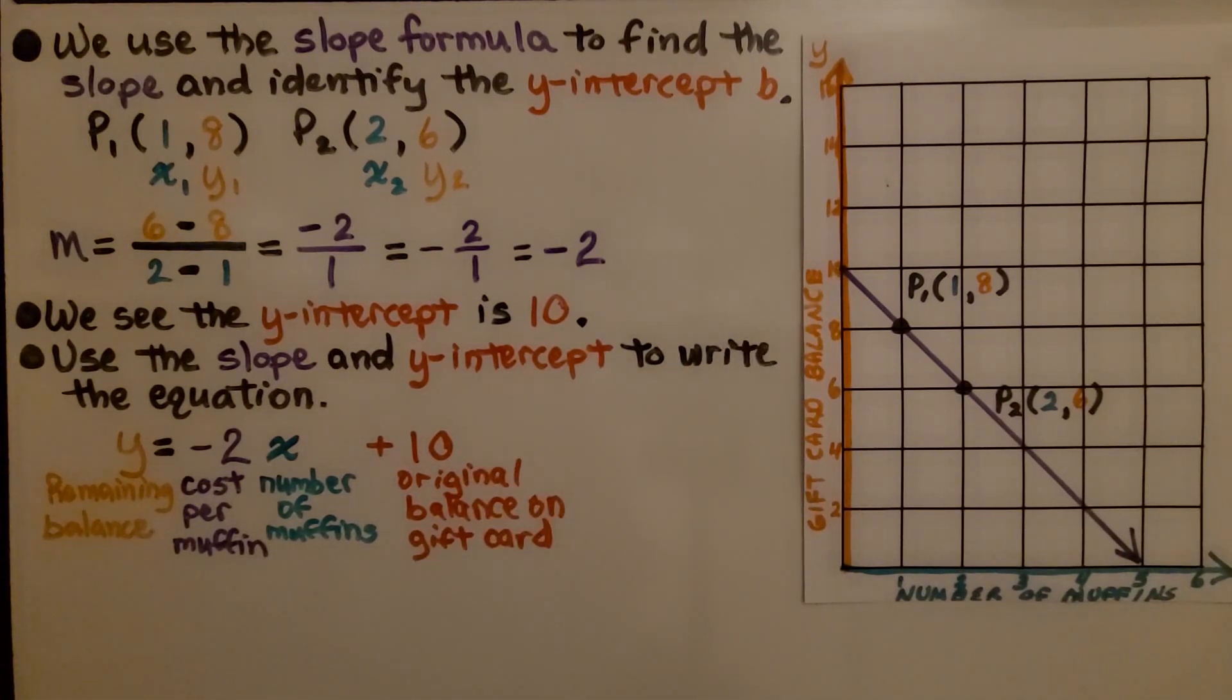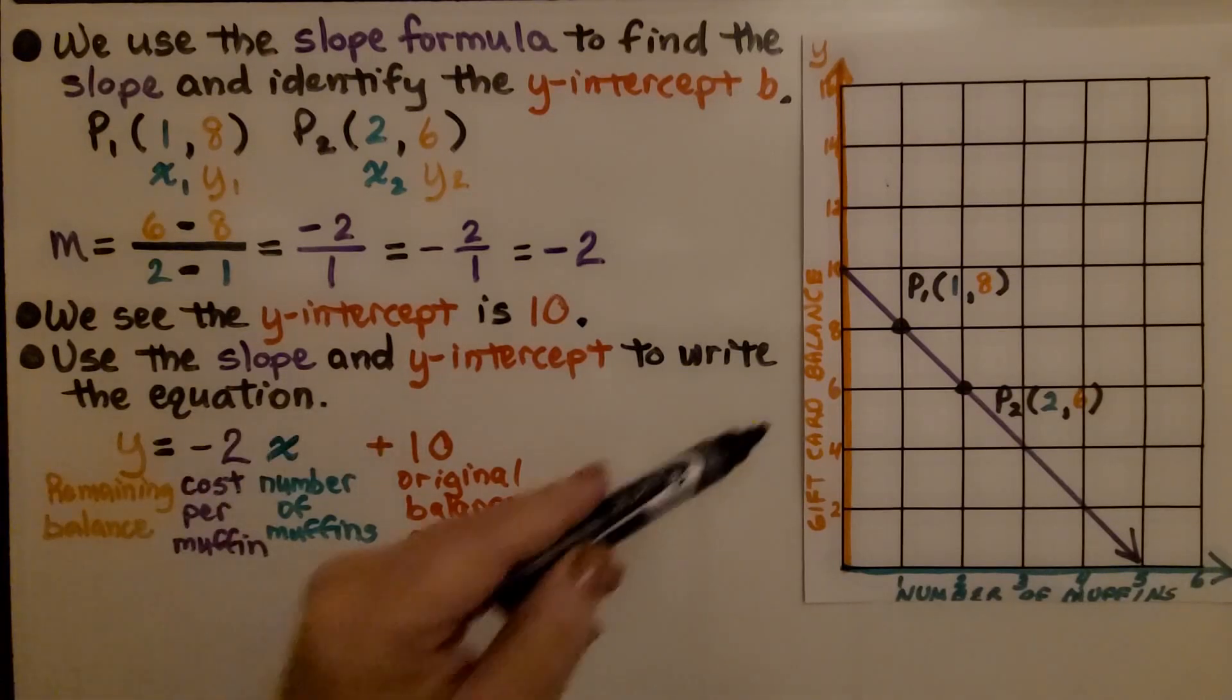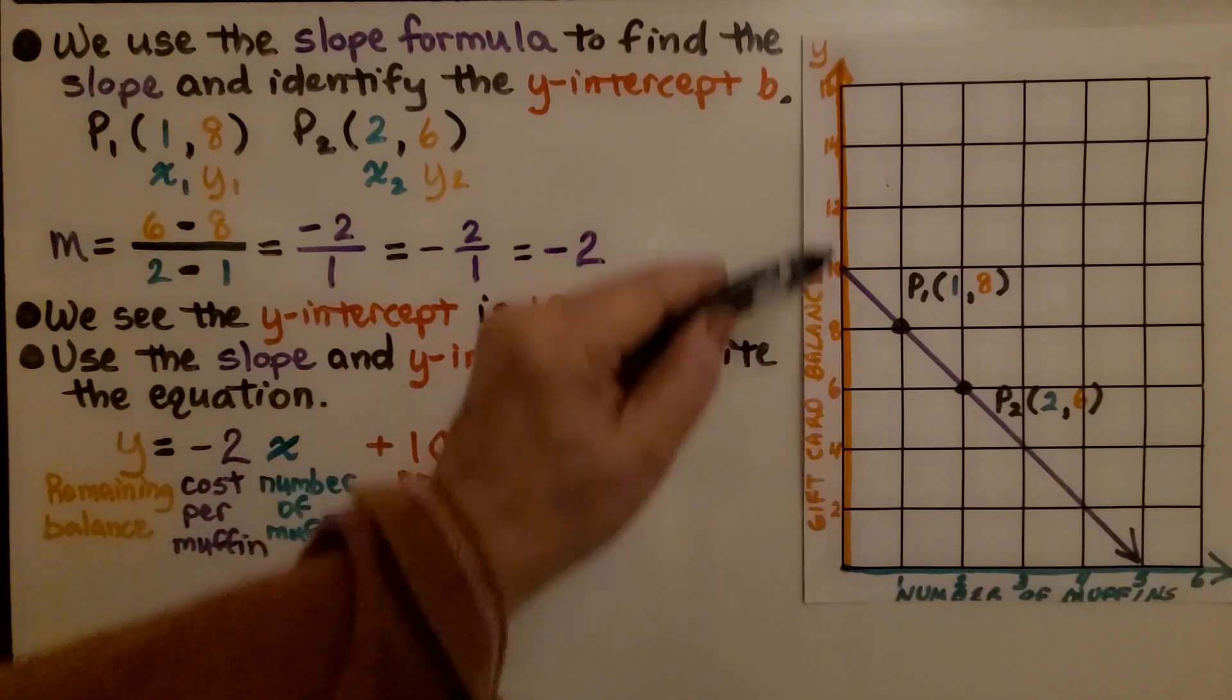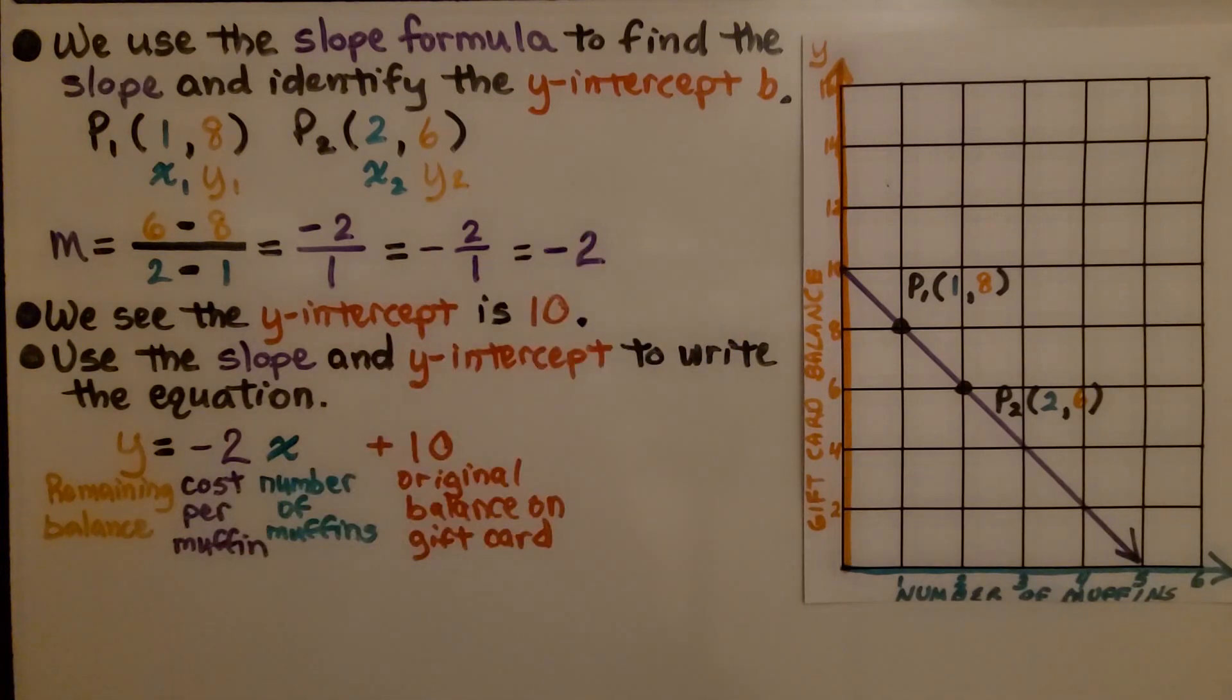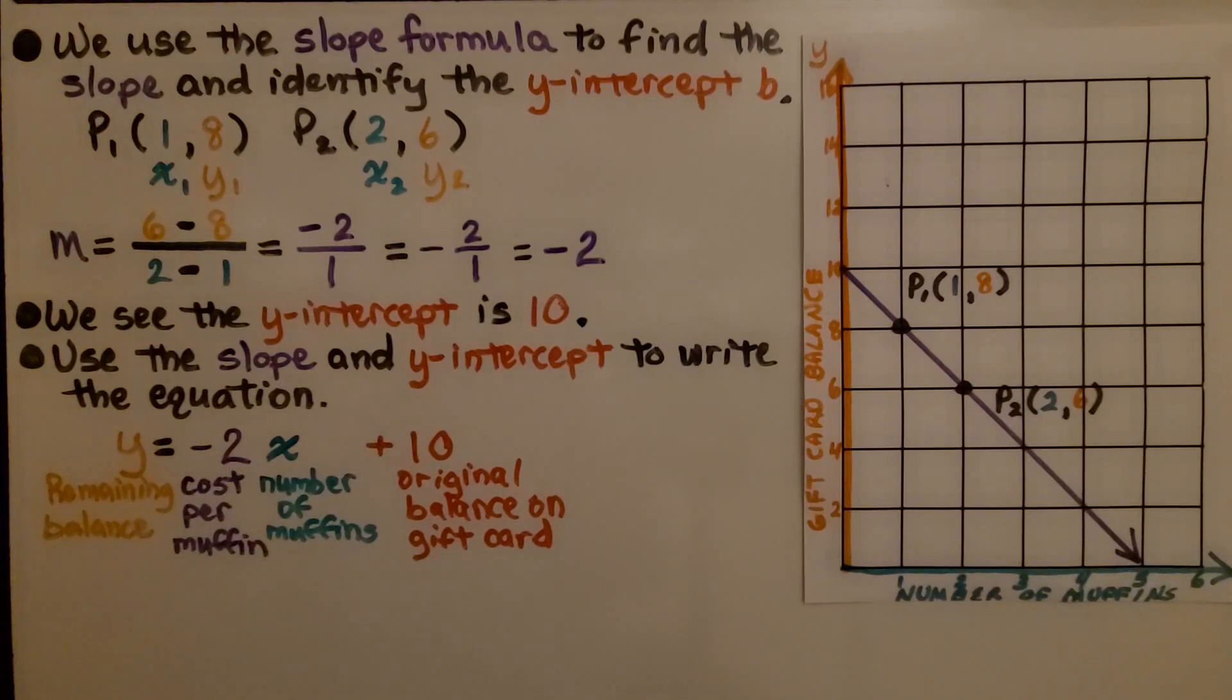We can see the y-intercept is at 10. We use the slope and y-intercept to write the equation. We have y equals negative 2x plus 10. We know this is a plus 10 because it's on the positive part, in the positive 10 position. So the remaining balance, y, equals negative 2, which is the cost per muffin, times x, the number of muffins, plus 10, the original balance on the gift card.